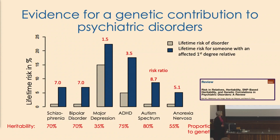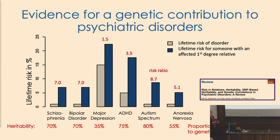So first of all, why study genetics? Why study psychiatric genetics? This is the basic starting point — an observation from epidemiological data. The grey bars show the risk of having one of these disorders in the general population. The blue bars show the risk if your father has the disorder — a first-degree relative. There's a massive increased risk, shown by the red numbers. That's one way to show a genetic contribution, and analyses confirm the contribution is very much mostly genetic factors.